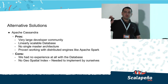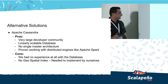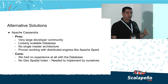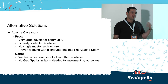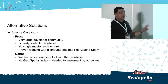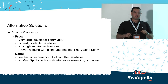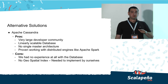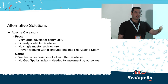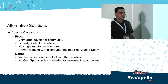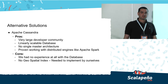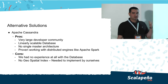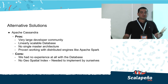How many of you have heard about or used Cassandra? It's a great database. The pros: a very large developer community since it's open source with a company backing it called DataStax; linearly scalable — truly linear, because you just add more capacity; no single master architecture, so no single point of failure; multiple coordinators to access and get data; and it's battle-tested to work with distributed systems like Apache Spark. The cons: we had no experience with Cassandra at all, and there is no geospatial index, since all our data points are geospatial — so we had to implement our own solution to downscale the data and then filter it in memory with real geospatial queries.